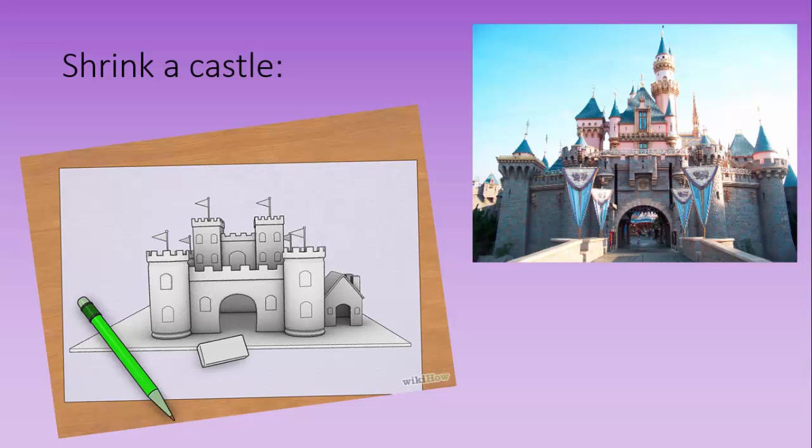Here is Sleeping Beauty's castle at Disneyland, and we want to shrink it down to a model. So we need one linear measurement for comparison. I'm going to choose the width of the portal right here. That doorway looks like it's about 15 feet across to me. And in my model, I would like this doorway to be 4 inches across.